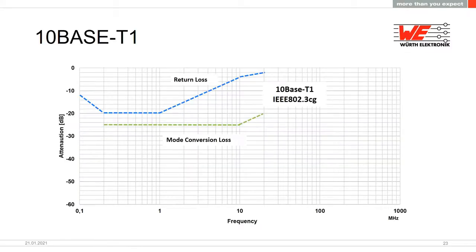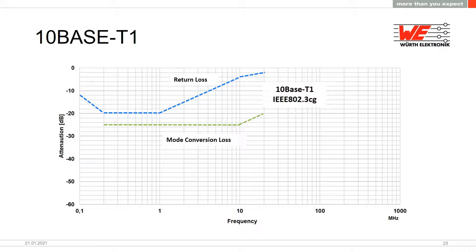Looking at IEEE 802.3cg for 10BASE-T1 MDI requirements, the key parameters are return loss and mode conversion loss. Mode conversion loss is when a differential mode signal converts to a common mode signal inside the circuit. While the norm requires approximately −25 dB from 200 kHz to 10 MHz, one engineer noted that −45 dB is needed in practice to achieve reliable communication over 1000 meters.